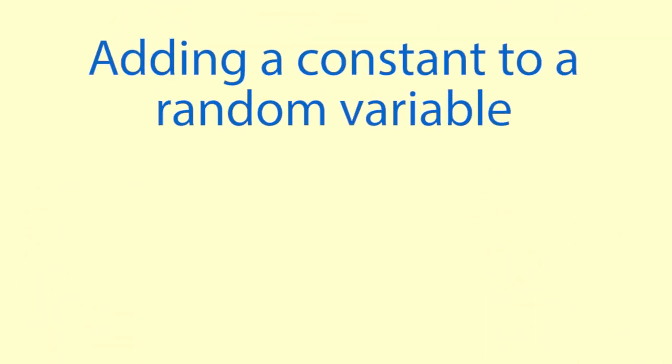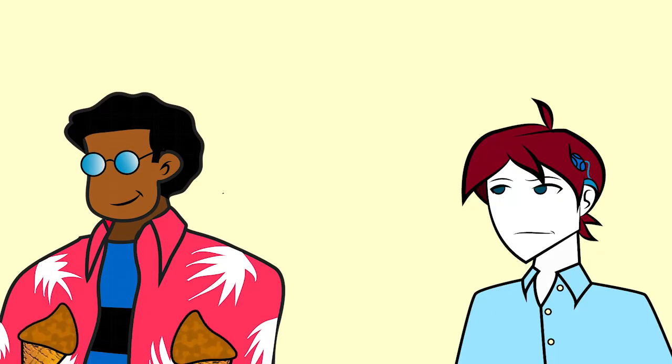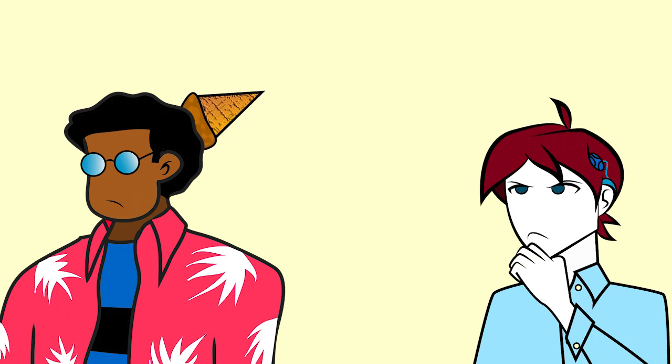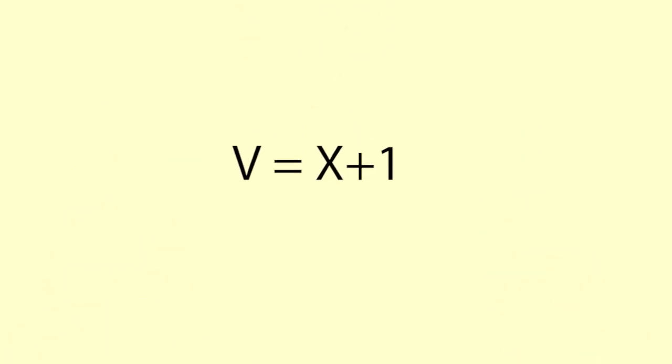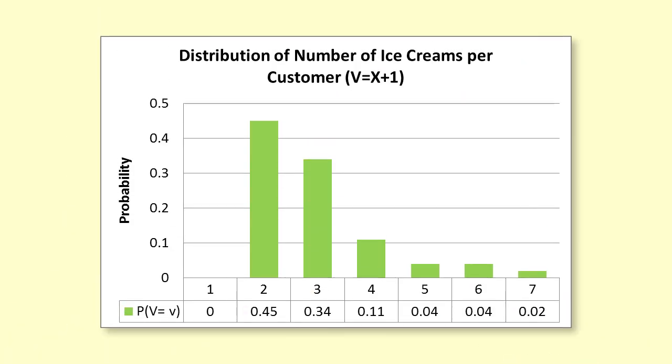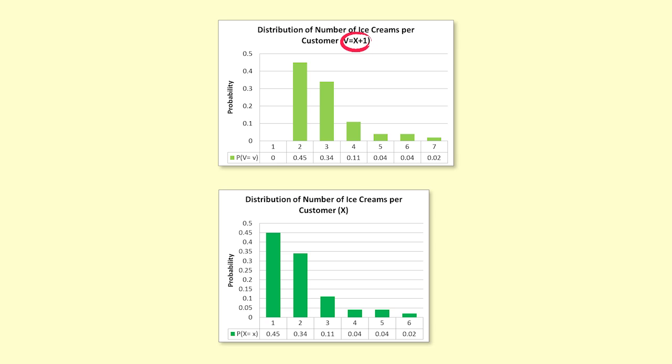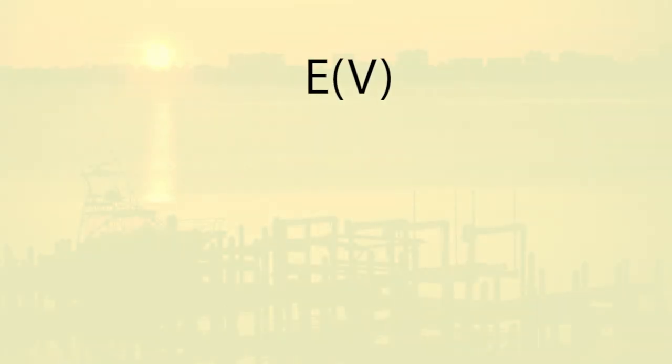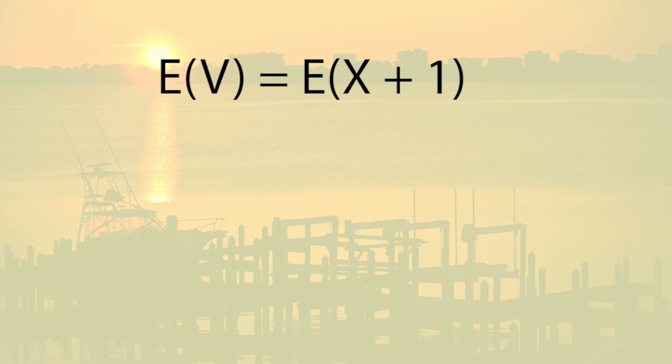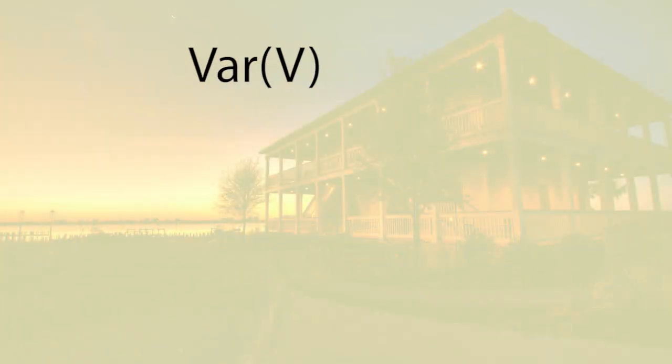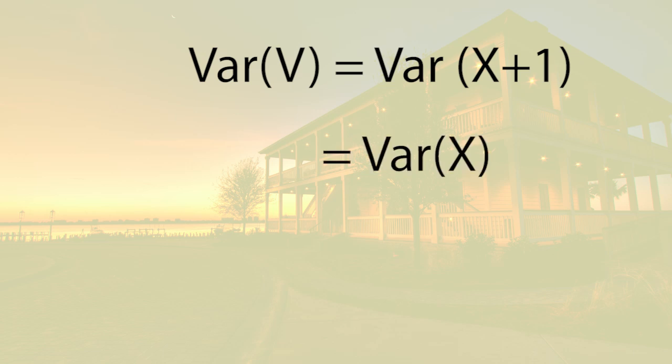And here is one last transformation for this video. Say Luke has one customer left and gives away one free ice cream in addition to the number ordered. What is the distribution for the number of ice creams now, assuming that the customer doesn't change his or her order? We define v as x plus 1. The distribution for v looks like this. The expected value has increased by 1, but the variance and standard deviation have stayed the same. So the expected value of v equals the expected value of x plus 1, which equals the expected value of x plus 1, which equals 1.94 plus 1 equals 2.94. And the variance of v equals the variance of x plus 1, which equals the variance of x.